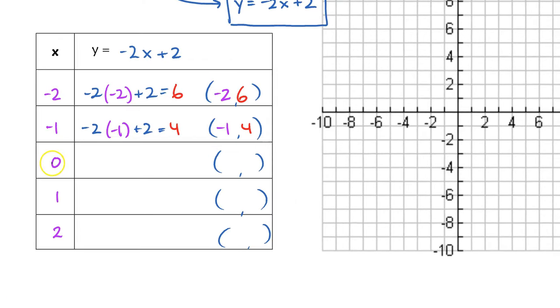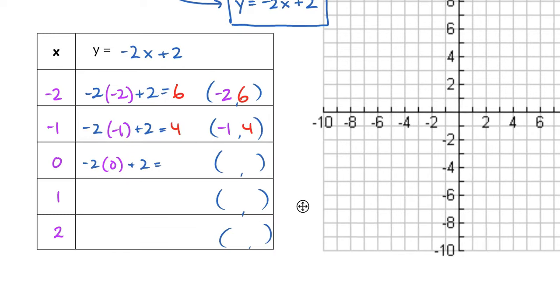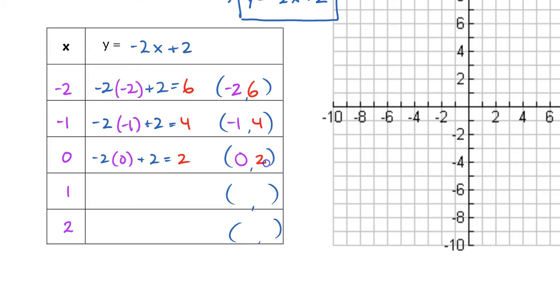All right, next up we are going to plug in 0, so we have negative 2 times 0, and then plus 2. Now the nice thing about plugging in 0 is that when you take anything and multiply it by 0, that whole thing is just going to be 0. So the entire first term here drops out and leaves you with just this number, so the answer is just going to be 2 here, positive 2. So I've got the coordinate 0, 2.